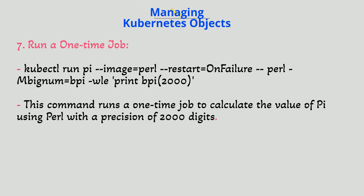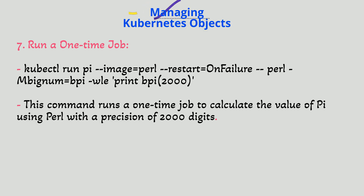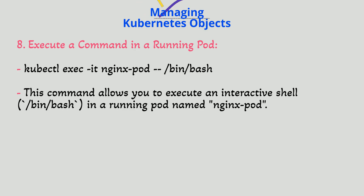7. Run a one-time job. `kubectl run pi --image=perl --restart=OnFailure -- perl -Mbignum=bpi -le 'print bpi(2000)'`. This command runs a one-time job to calculate the value of pi using Perl with a precision of 2000 digits.